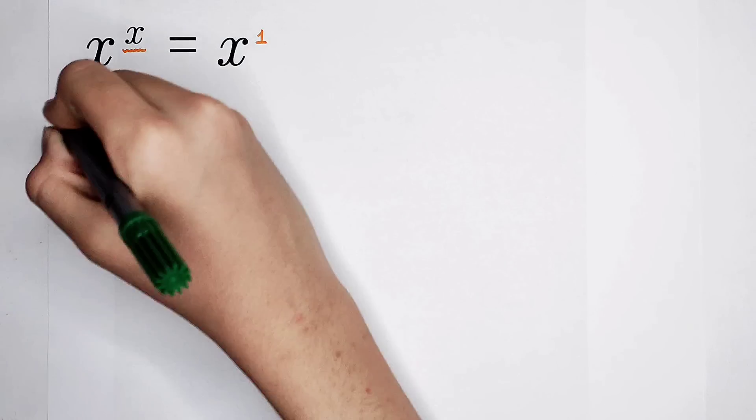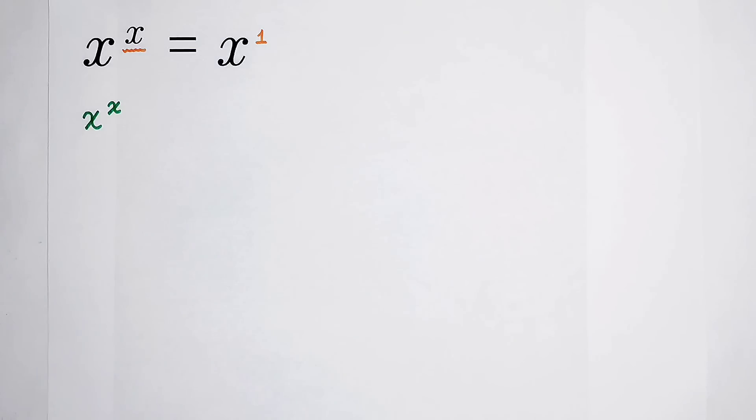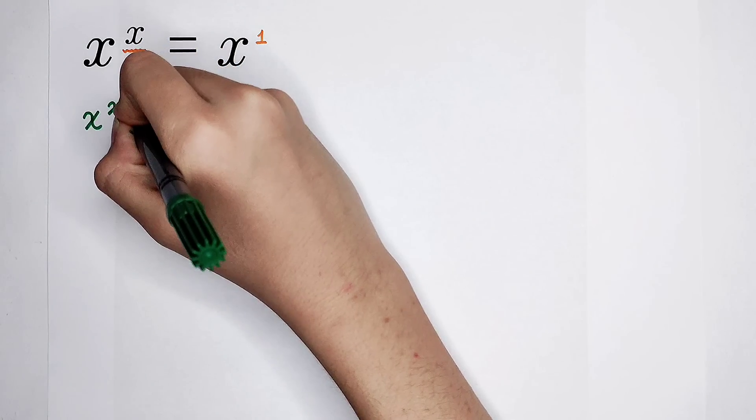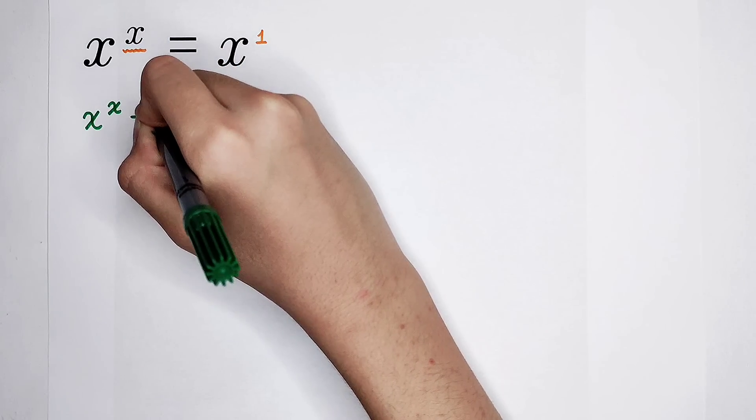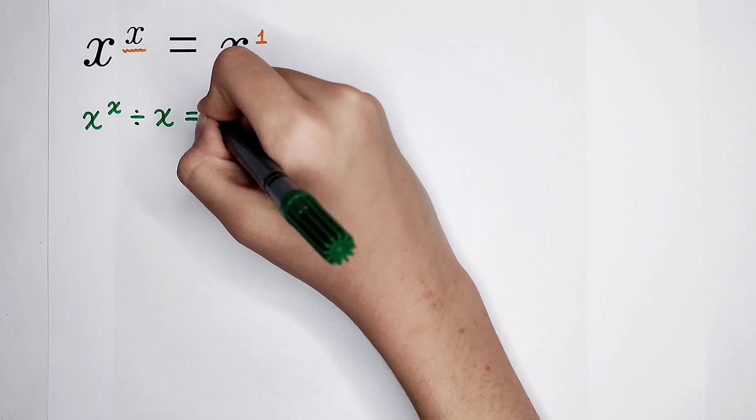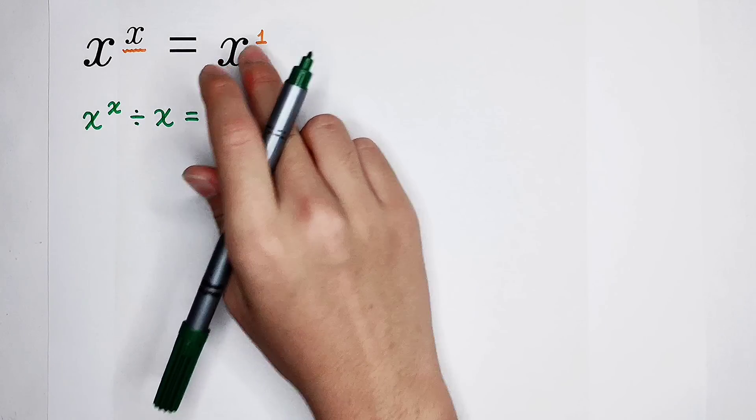So our first work is divide by this x on both hand sides. That is, x to the power of x divided by x is equal to x divided by x, which is 1. But is it right? If you divide by x on both hand sides, you have to explain that x cannot be 0.